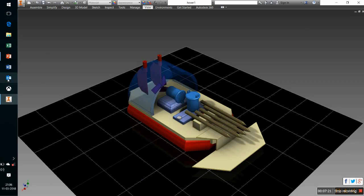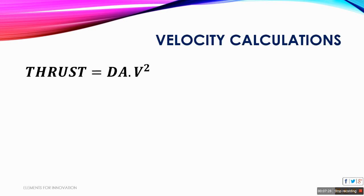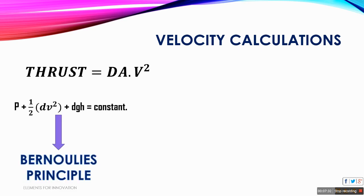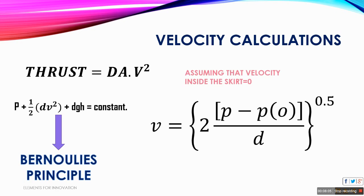Now we will understand how to calculate the velocity — or the escape velocity — of that air. Thrust is given by density × area × velocity squared, and Bernoulli's principle is given by pressure head + kinetic head + potential head. Assuming that the velocity inside the skirt is zero when the skirt is completely filled, we can calculate the velocity of air coming out, which is given by: V = ( 2(P_inside − P_outside) / density )^0.5.